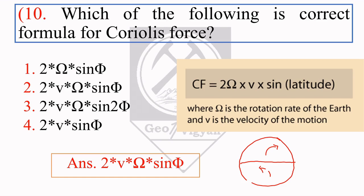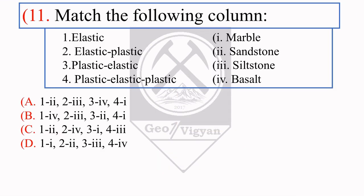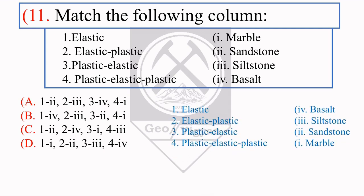The next question is a match-the-following on engineering properties of rock. Salt is an elastic material; siltstone is elasto-plastic; sandstone is plastic-elastic; marble is plastic-elastic-plastic. So the right answer for this question is option B.